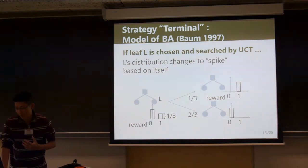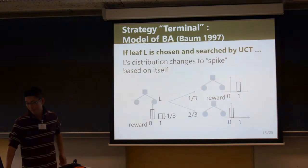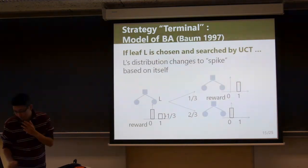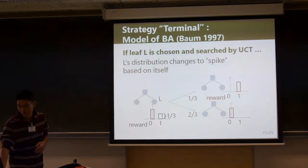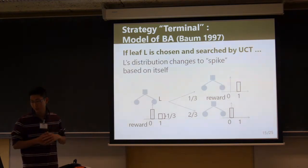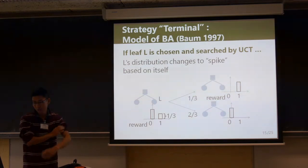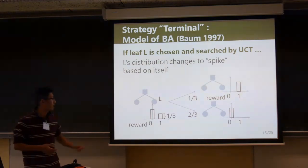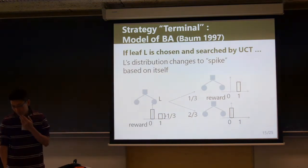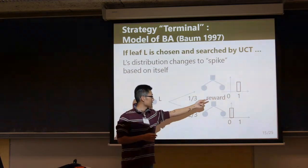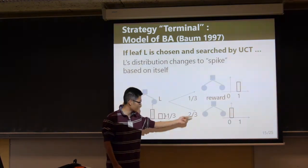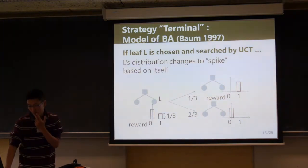I explain exploration search based on the model of gradient approach. In this model, if leaf L is chosen, L's distribution is assumed to change to a spike based on L's current distribution. For example, if the probability of reward 1 is 1/3 and reward 0 is 2/3, then the distribution changes to this spike distribution with probability 1/3 and to the other with probability 2/3.